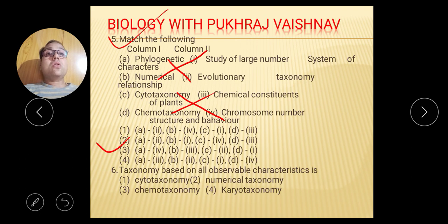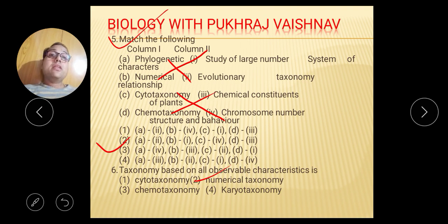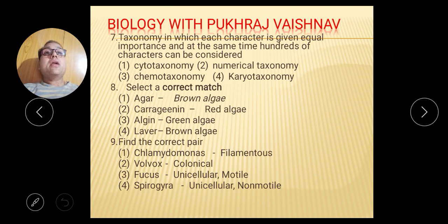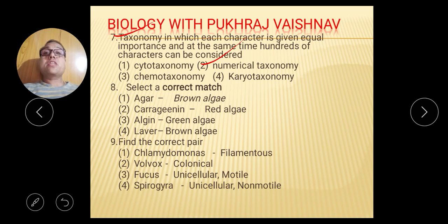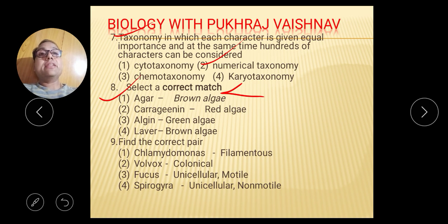Question number 6: Taxonomy based on all observable characters is numerical taxonomy. Question number 8: If you find red algae — the second option is right. Algae is also correct for the third option. Question number 9: the right answer is second.